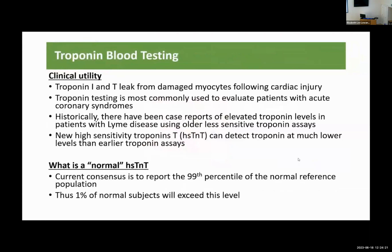Clinical utility of troponin blood testing: Troponin I and T leak from damaged myocytes following cardiac injury. Troponin testing is most commonly used to evaluate patients with acute coronary syndromes. Historically, there have been case reports of elevated troponin levels in patients with Lyme disease using older, less sensitive troponin assays. The new high-sensitivity troponin T can detect troponin at much lower levels than earlier assays. The current consensus is to report the 99th percentile of a normal reference population; therefore, 1% of normal subjects will exceed this level.